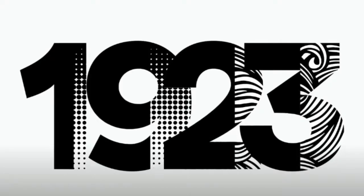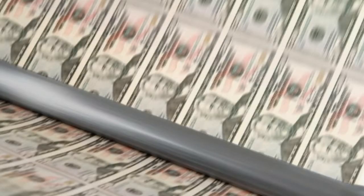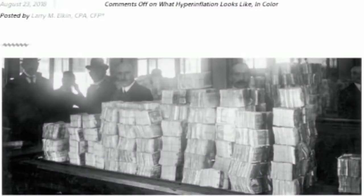Now the year is 1923. Straight after the invasion of the Ruhr, the Weimar government decided they want to print out lots of notes. This sends the value of the mark, the German currency, all the way from one mark to the pound, to 200,000 billion marks to the pound.